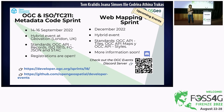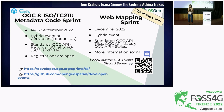There will be a code sprint in mid-September, jointly organized by OGC and ISO TC211, focusing on metadata standards: OGC API Records, ISO 19115, FGJSON, and STAC. Registrations are open and everyone is invited to participate either in person in London or virtually. And there will be another code sprint towards the end of the year, focusing on standards related to web mapping: OGC API Tiles, OGC API Maps, and OGC API Styles.